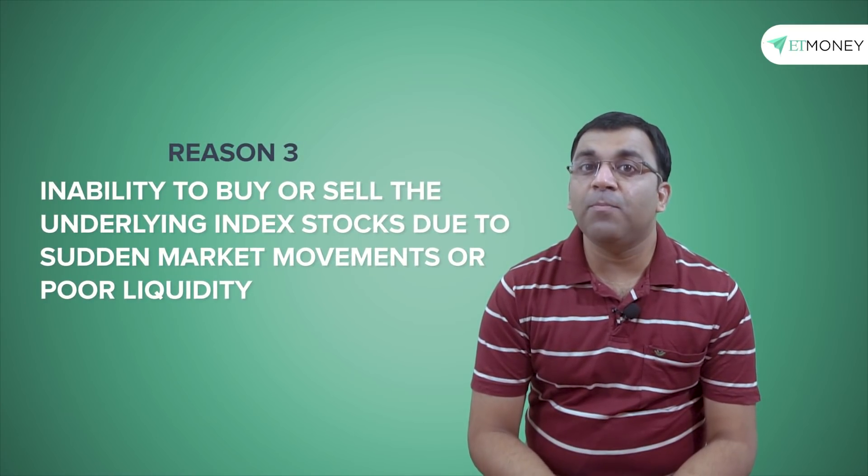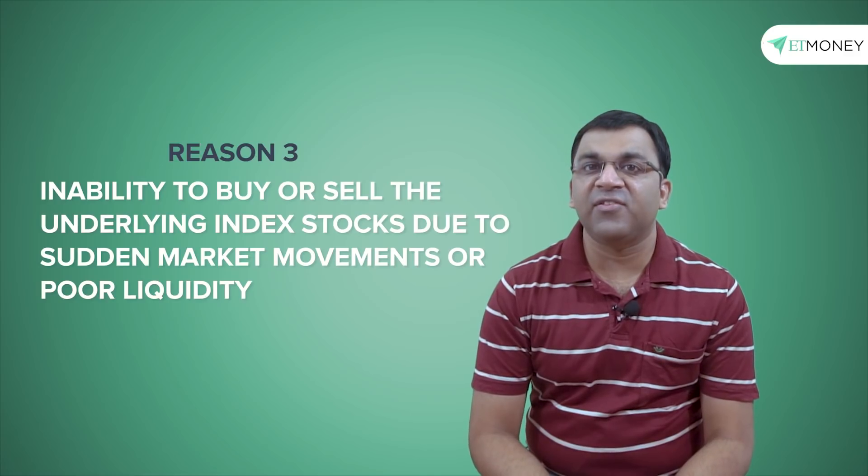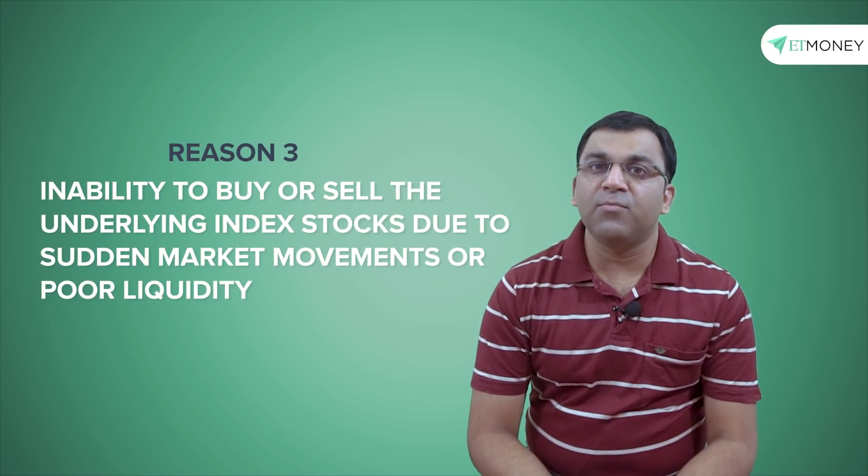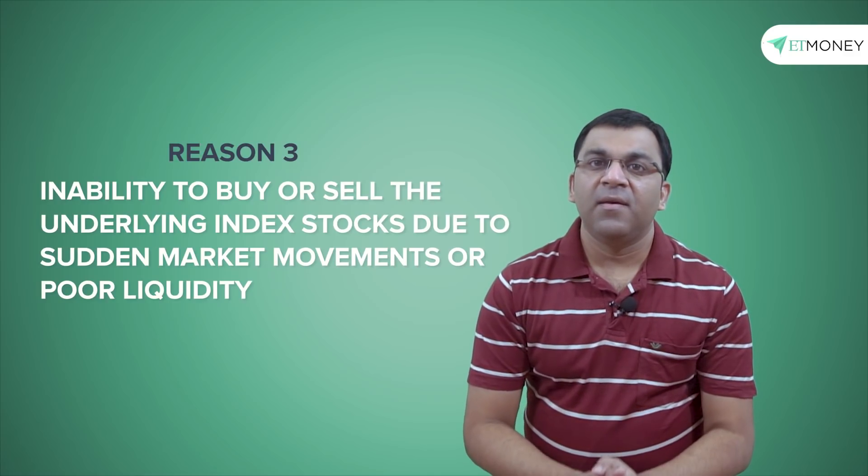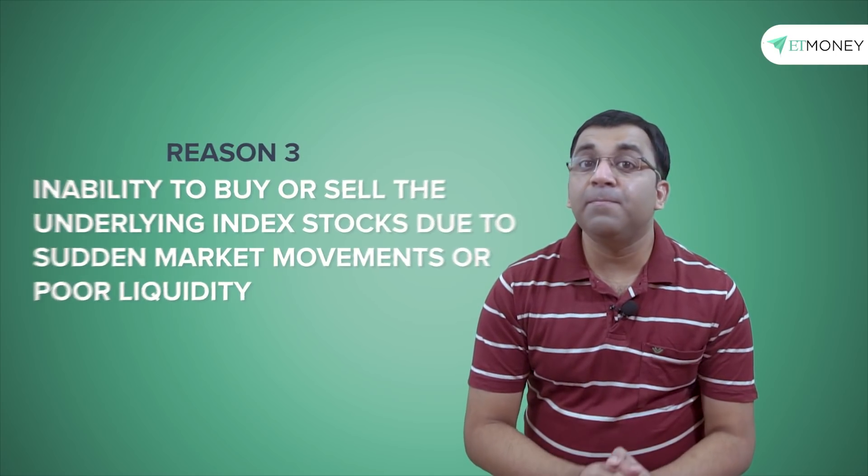And a third reason which leads to tracking errors is the inability to buy or sell the underlying index stocks due to sudden market movements or poor liquidity. The imbalance caused by a larger than normal bid-ask spread increases the level of volatility, which then has a bearing on the tracking error. This situation can generally be seen in sectoral or thematic funds which tend to have a larger tracking error.